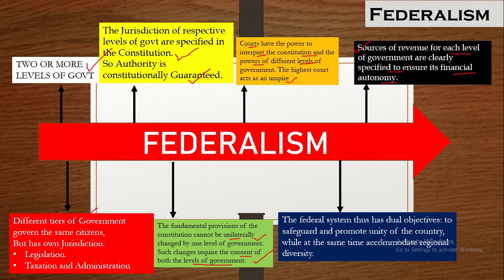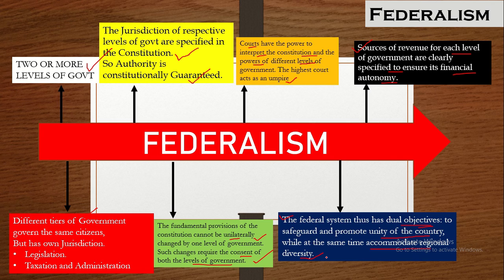Coming to the last key feature of federalism: the federal system has dual objectives. First, federalism wants to safeguard and promote the unity of the country. At the same time, it also wants to accommodate regional diversity. These are the dual objectives of the federal structure — to safeguard and promote the unity of the country while also accommodating the regional diversity of the nation.